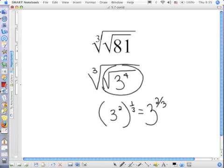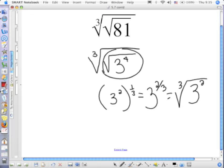And put it back as a radical because that's how we started. What is that radical? Cube root of 3 squared. Can you take any 3's out? No, there aren't enough.